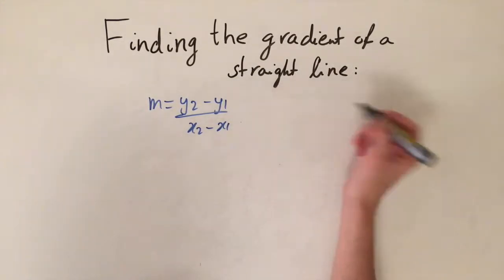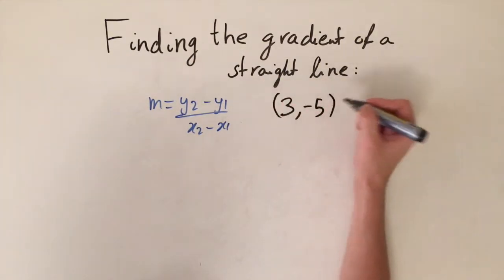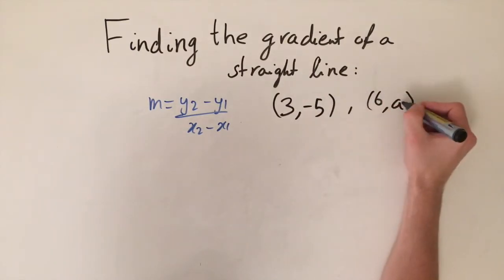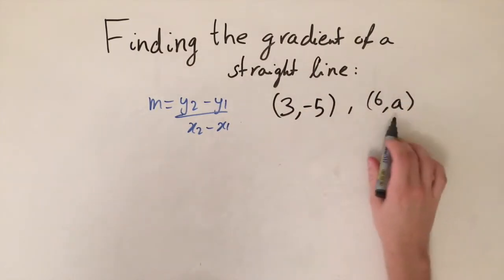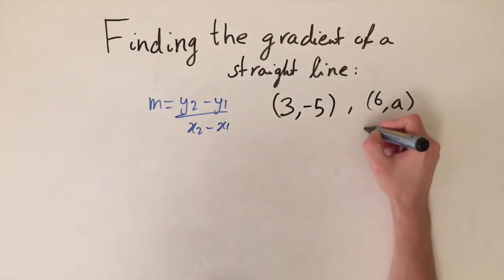Okay, I want to do one final example and this one's going to be a bit harder. So we're going to get given the two points as (3, -5) and also (6, a). So a is just a constant and we don't know what this is—this is what we want to find out. But this time we also get given that the gradient is 4.